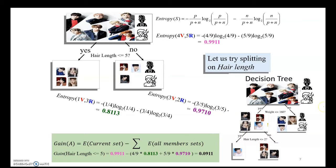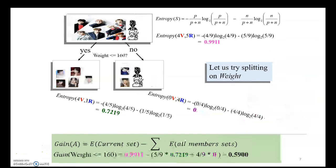We need to repeat this for each attribute's entropy to decide which attribute should be at the root position. From this, we can also identify the value of information gain for hair length, which is 0.091.